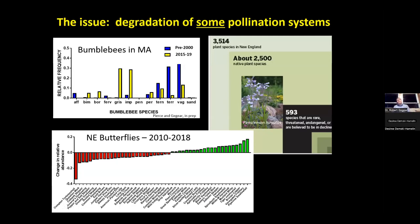These systems are being degraded at an alarming rate globally, from both the animal side and the plant side. Here's data from Massachusetts on bumblebees — I went to museum specimens, returned to the same locations, and resurveyed. Pre-2000s blue bars, yellow bars more recent — in many cases the yellow bars are lower. In some cases, like Bombus affinis, it's likely locally extinct. Similarly, Massachusetts Butterfly Club data shows many butterfly species declining from 2010 to 2018, and many native plant species are in decline as well.